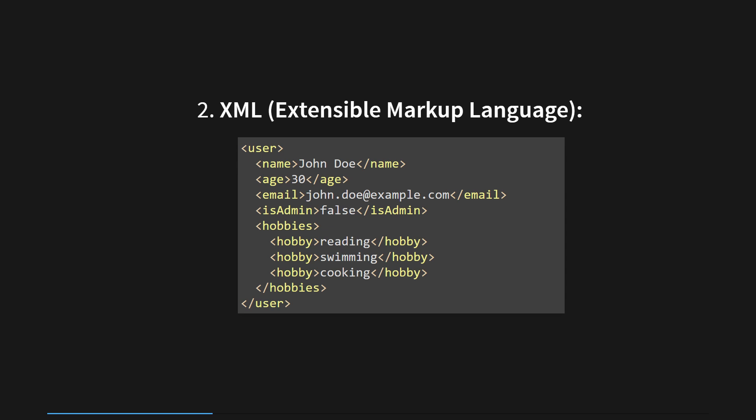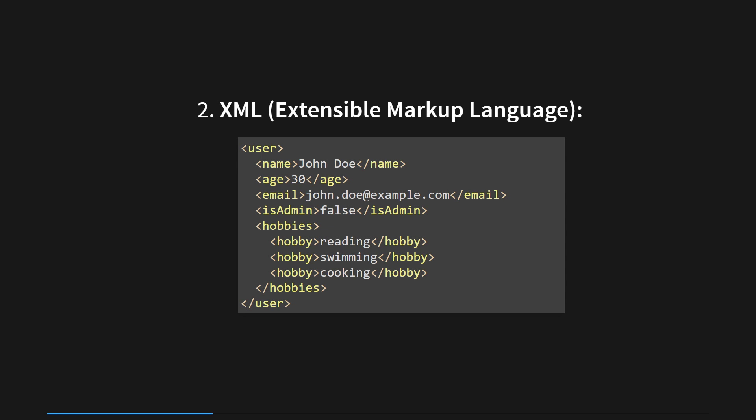While XML is more verbose compared to JSON, it provides a flexible and extensible way to organize and transmit data, making it suitable for various applications and industries. An example of XML would include data elements wrapped in relevant tags, enabling clear identification and interpretation of the data's structure and content.